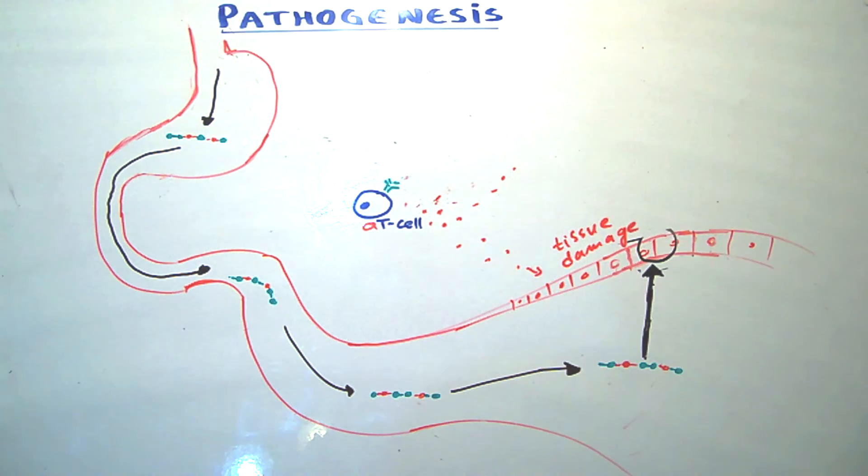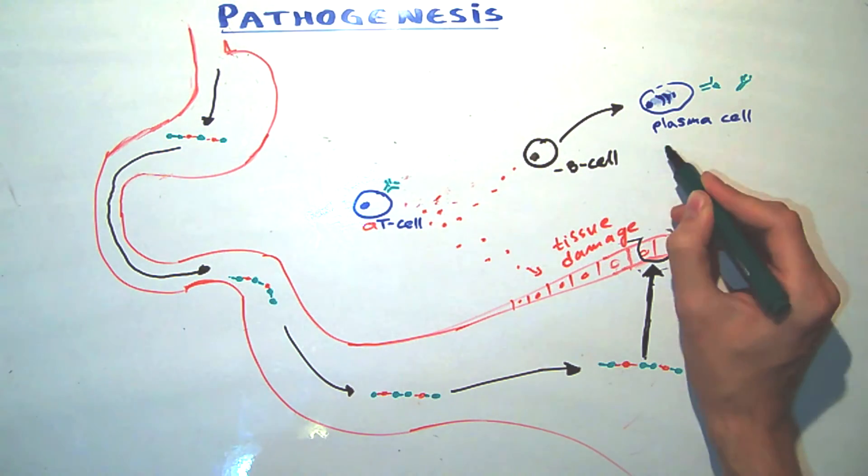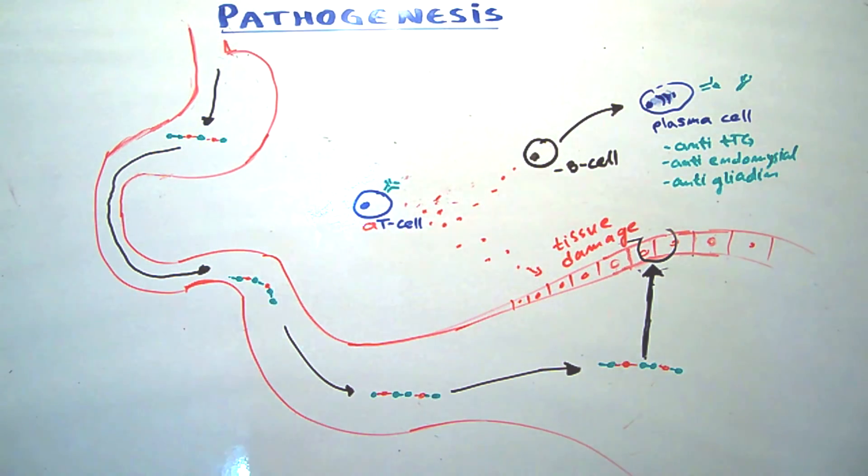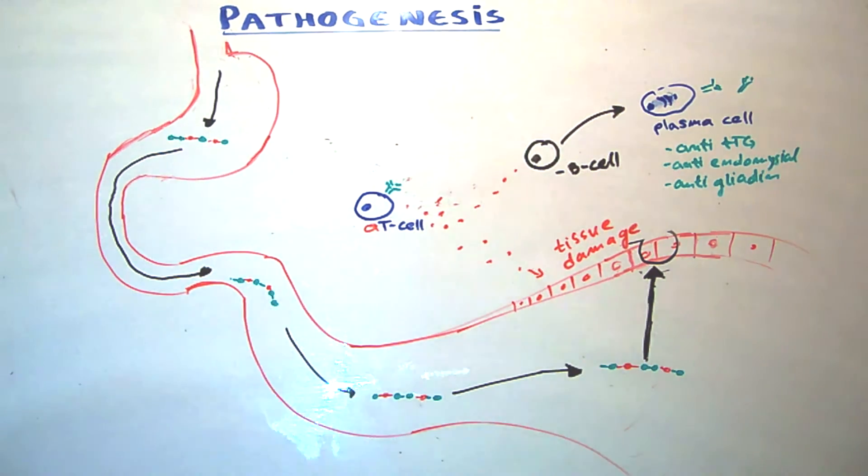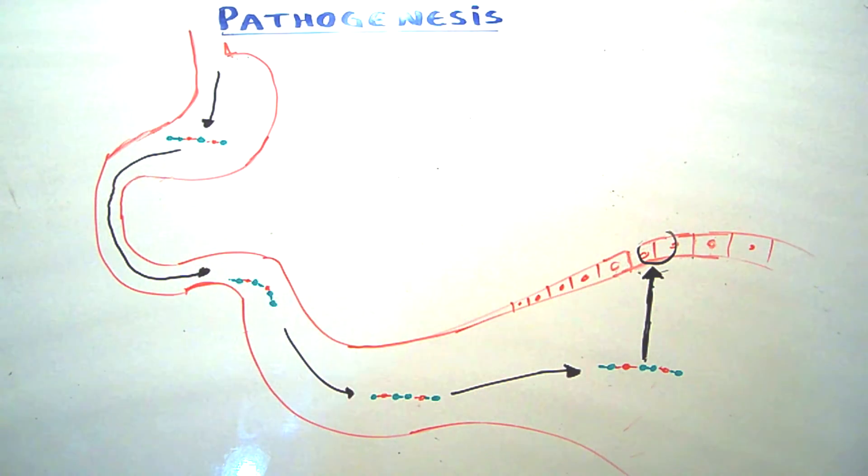Also, those cytokines activate B cells to turn into plasma cells and produce anti-gliadin, anti-tissue transglutaminase, and endomysial antibodies, very well known from before. So this is the main mechanism of pathogenesis for celiac disease.